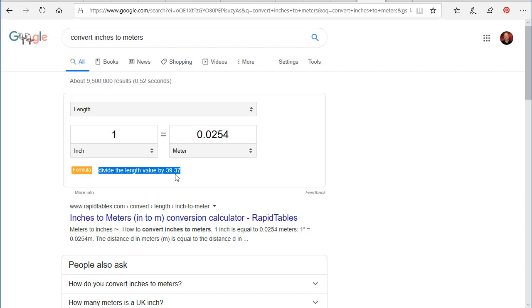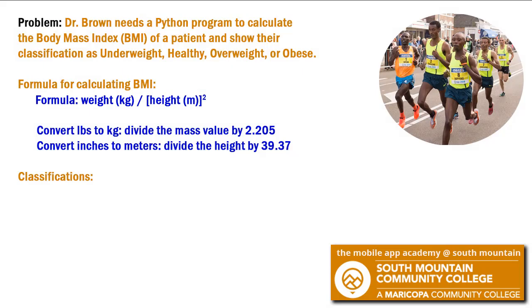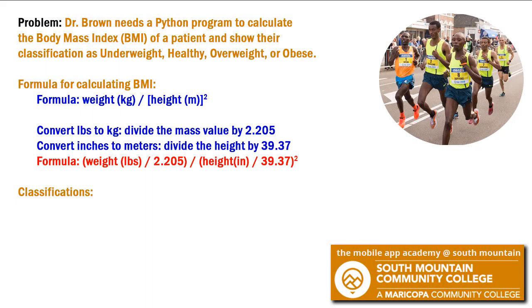So again, I'm going to take a note of that. So I've created a note here of converting inches to meters, divide the height by 39.37. So my new formula is the weight in pounds divided by 2.205. And I'm going to divide that measurement, which is now the kilograms, by the height in inches, divided by 39.37. That whole measurement squared.